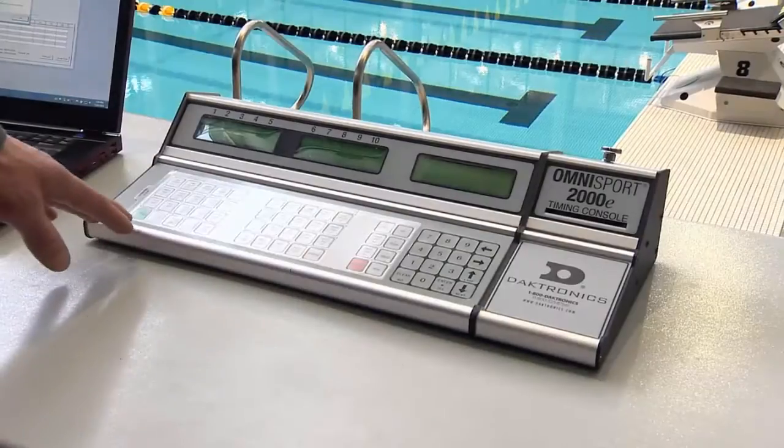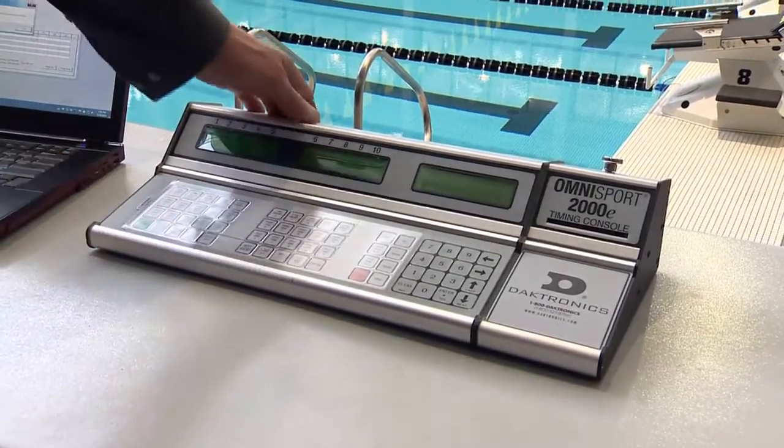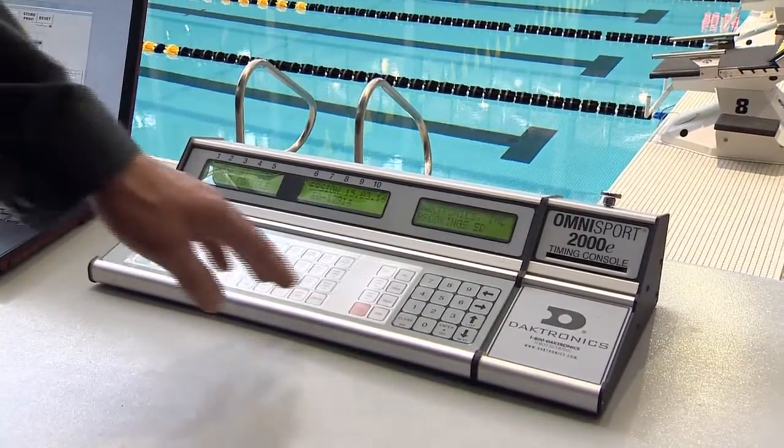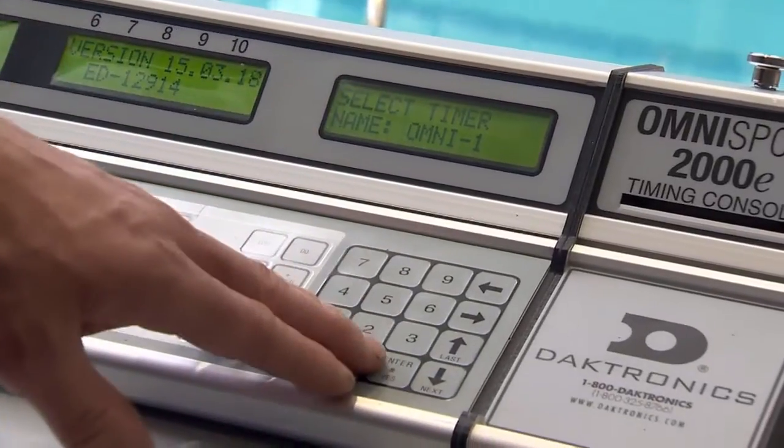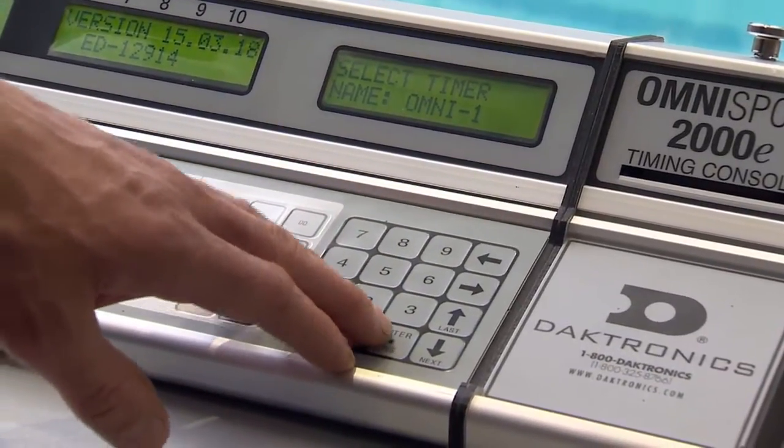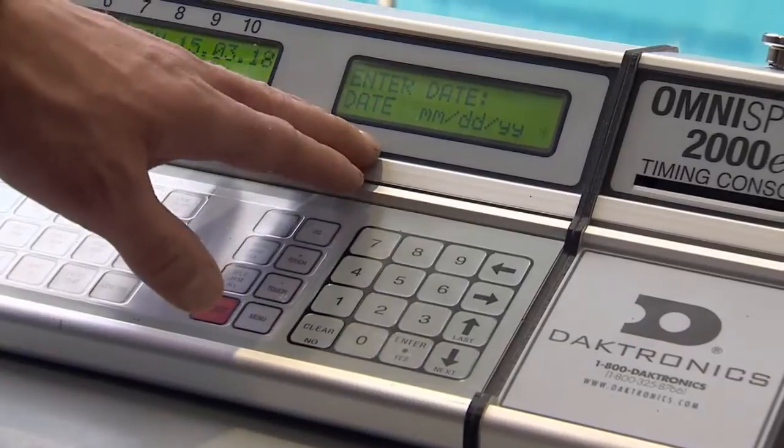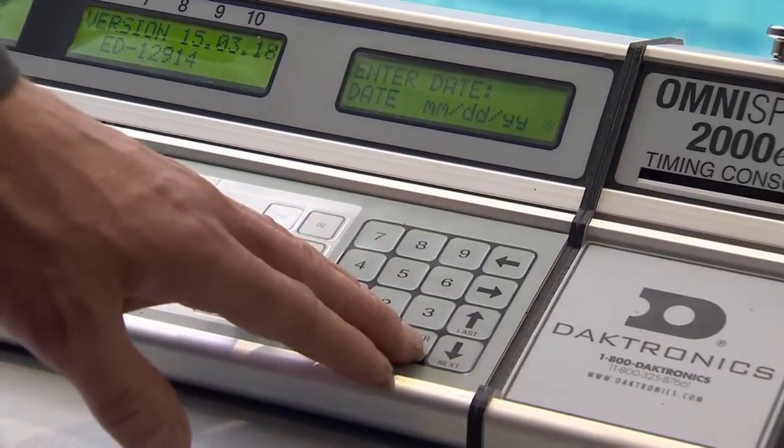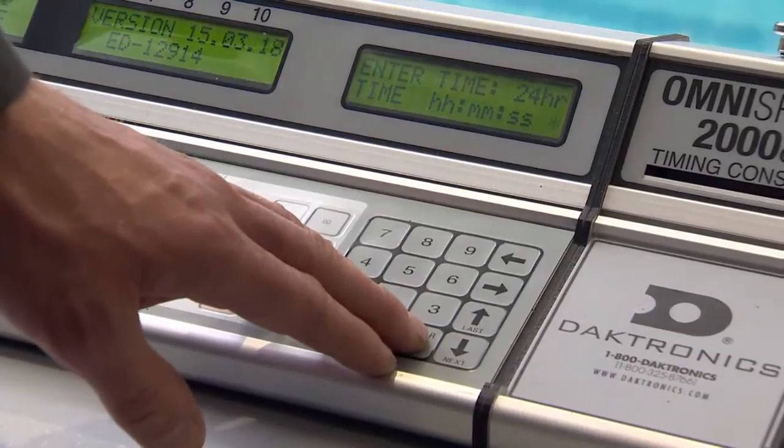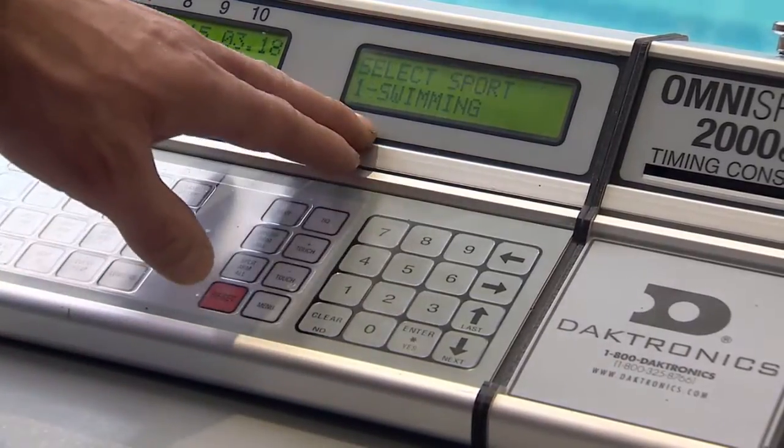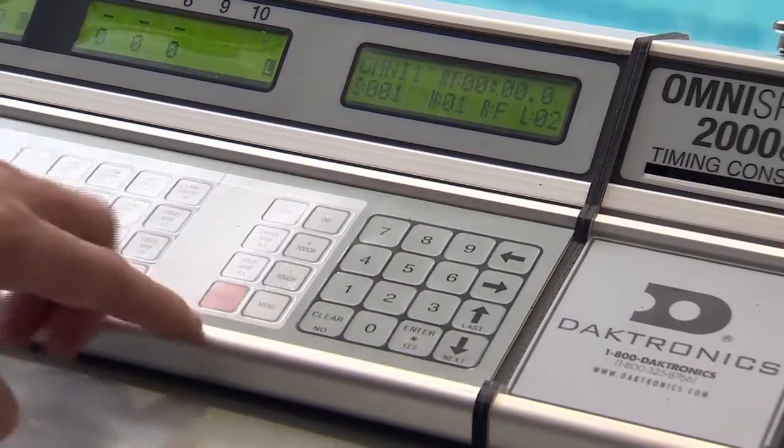Here at the Omni Sport, we can turn this on and enter it into test mode. You can select the timer name, which is Omni 1 since we only have one timer. We can bypass the date by pressing enter and bypass the time by pressing enter since we are only doing a test. Here we can select the sport of swimming.